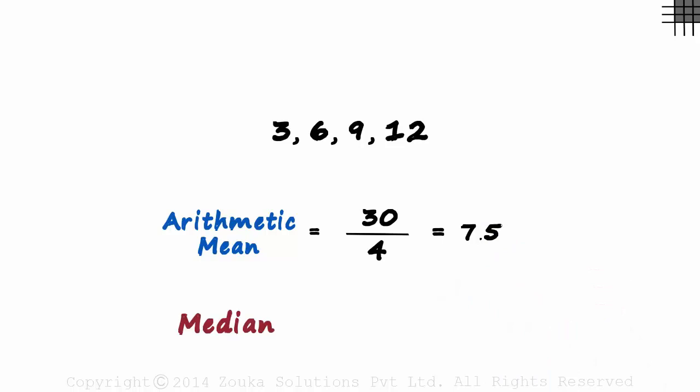What about the median? The number of terms is even, so the median will be the average of the middle terms, which is 6 plus 9 divided by 2, which also equals 7.5. Both are equal.